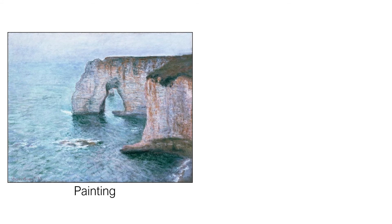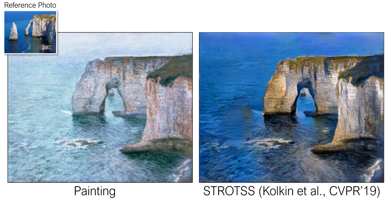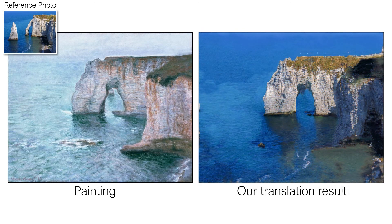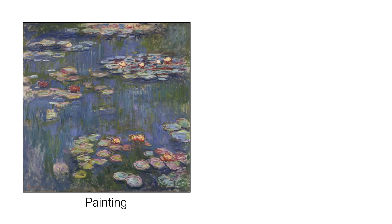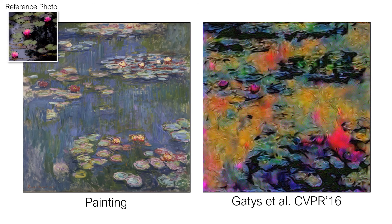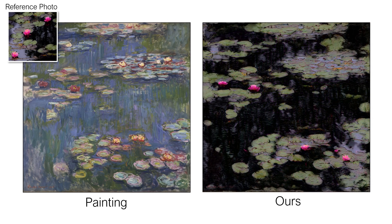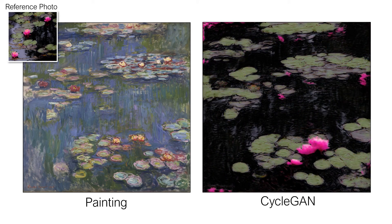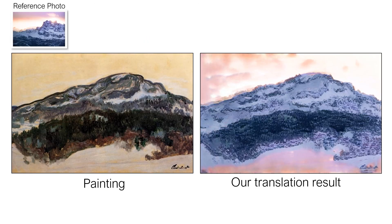Here's a famous painting by Monet. Using a reference photo, we applied a stylization method to turn the painting into a photograph, but it's quite difficult. Here's the result of Gatys, here's Strotss, here's WCT2, and here's our translation result. We also tried a patch version of CycleGAN with pixel cycle consistency loss, but it produced more artifacts. Here's another painting of Monet, and here are the results of the stylization methods. Our method best matches the style and photo realism of the reference photo. Here are more results of single-image translation. The full comparison is shown in the paper.